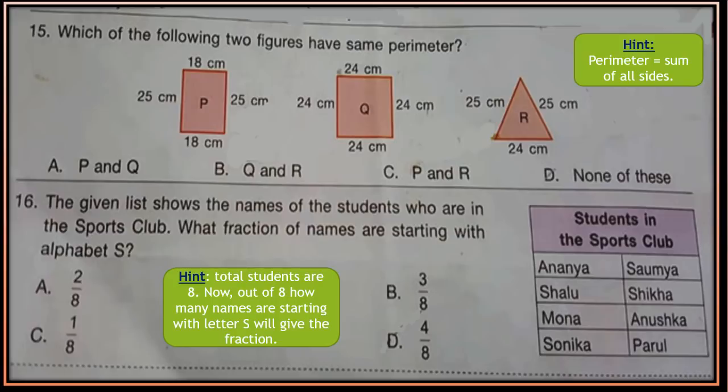Question 16: The given list shows the names of students in the sports club. What fraction of names start with the alphabet S? See the table — there are 8 students in the sports club. Find the fraction of names starting with the letter S — out of 8, how many students have names starting with S?